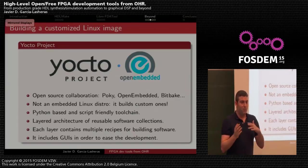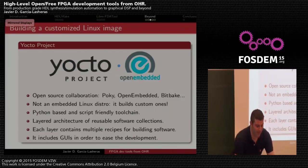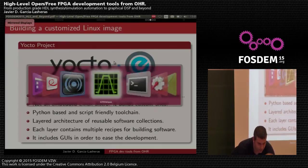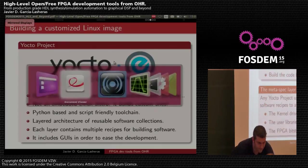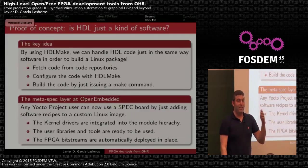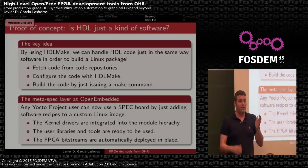Each layer contains multiple recipes for building software, and it includes a graphical user interface to make development easier. The key idea is that by using HDL Make, we can handle HDL code in the same way as software to build a Linux package — we can fetch the code from a repository and configure it using HDL Make.